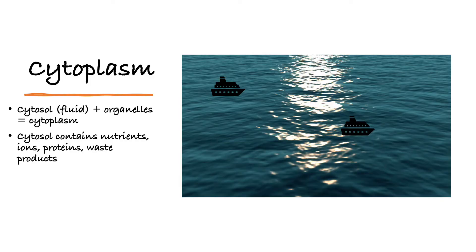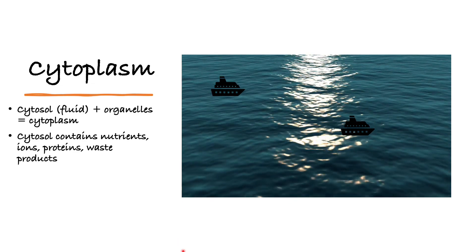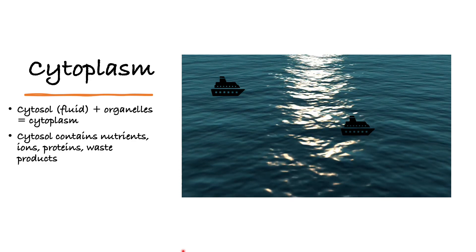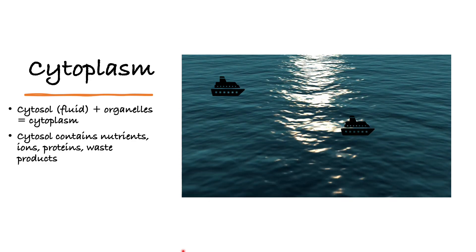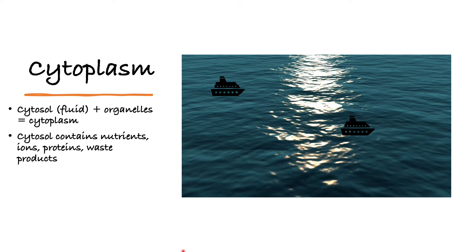So I mentioned cytoplasm. Cytoplasm is actually made up of two things — cytosol, which is just the fluid, the gel-like fluid inside the cell. When you add the organelles, we now call that cytoplasm. So the cytoplasm is not just water — it contains nutrients, ions, proteins, waste products, and all these other things.